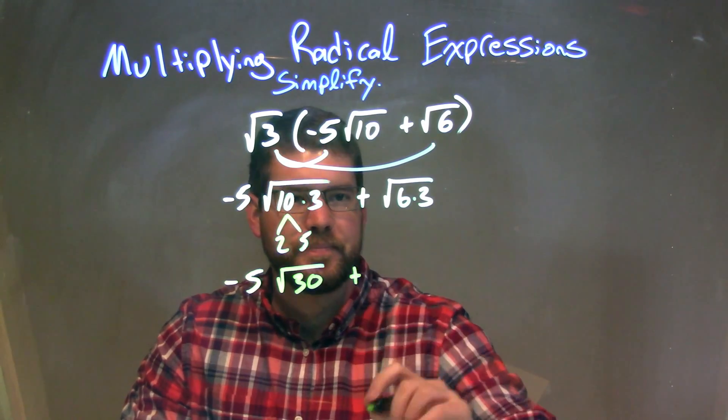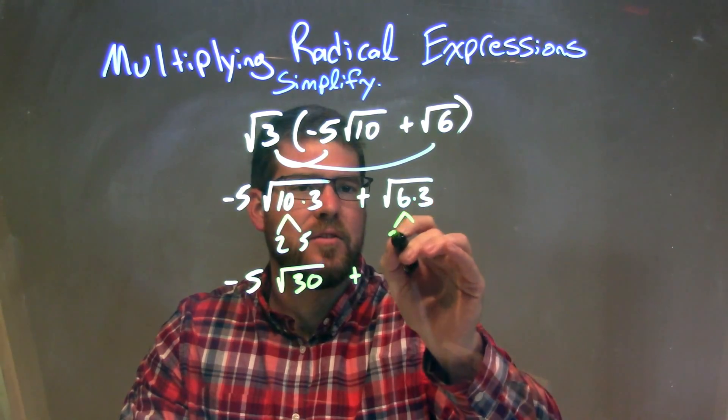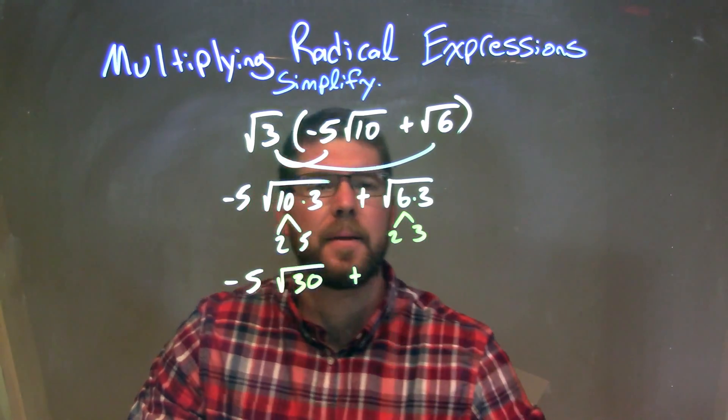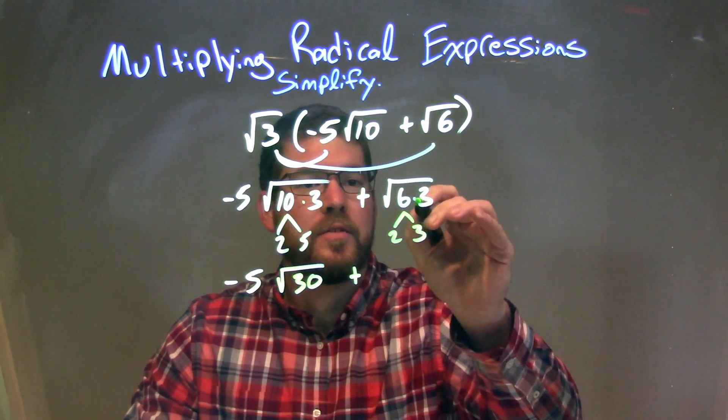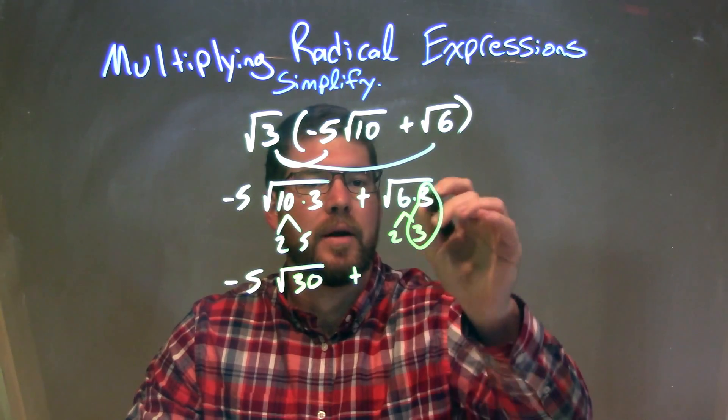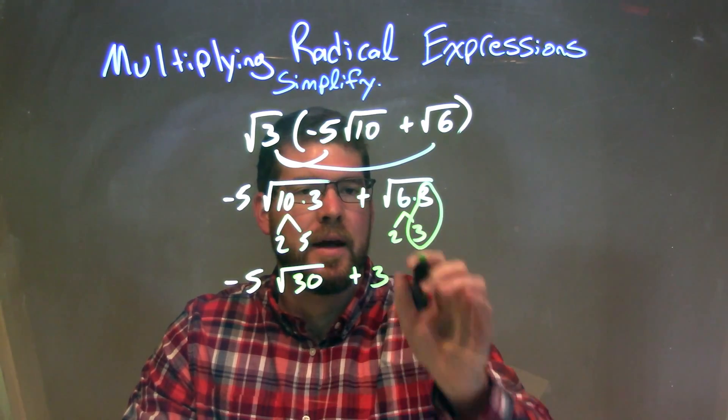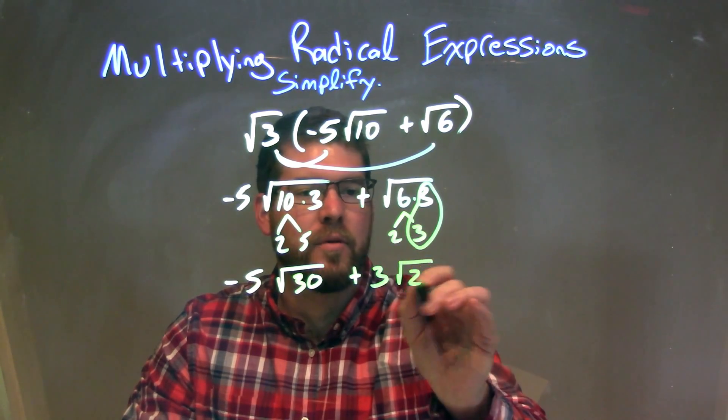Then we have the plus sign here. 6 breaks down to be 2 times 3. I do have a pair of 3s now, right there. A pair of 3s, so I'm going to put a single 3 on the outside, and the 2 is just left over inside the square root.